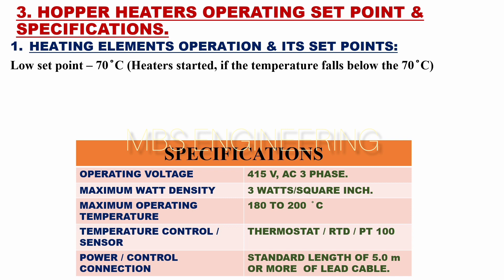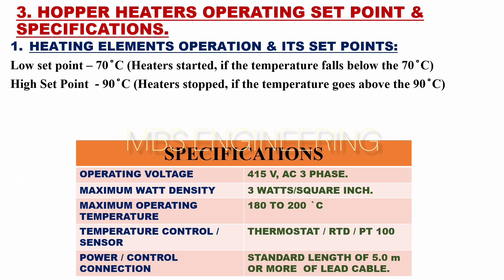We learn about the hopper heater's operating set points and specifications. Regarding the hopper heating element's operation set points: the low set point is 70°C, meaning heaters start if the temperature falls below 70°C. The high set point is 90°C, meaning heaters stop if the temperature goes above 90°C. The above set points can be adjusted based on the operating conditions.